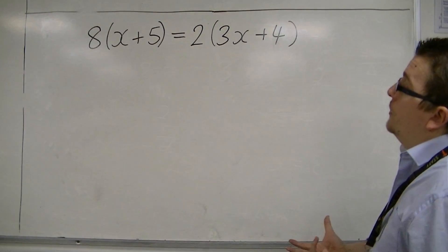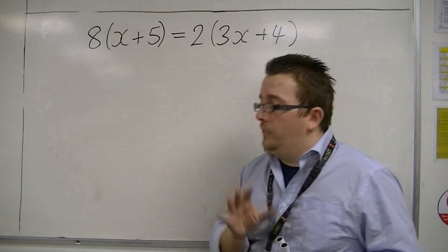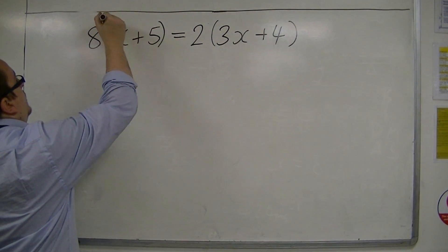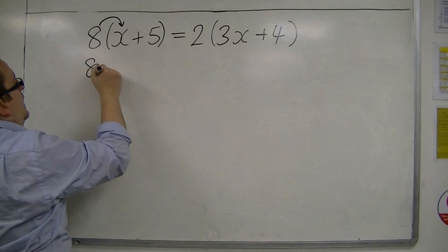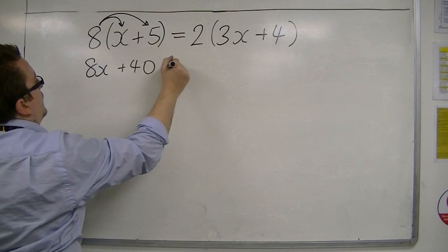So start off with what we did beforehand. When we had brackets, we expanded them. So let's do that first, because we understand how that works. So we've got 8 lots of x is 8x, and 8 lots of 5 is 40. That's the left-hand side.